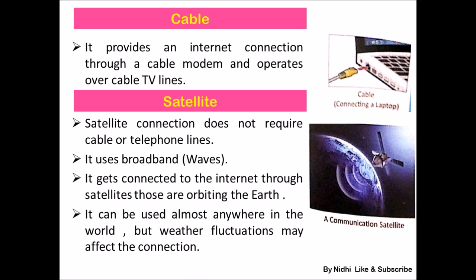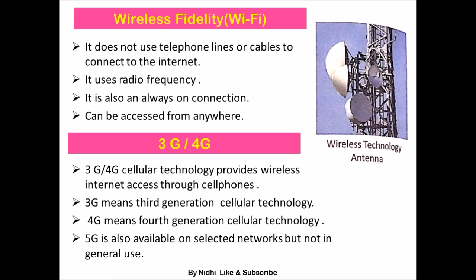The next type of connection is wireless fidelity, or Wi-Fi. It does not use telephone lines or cables to connect to the internet — it uses only radio frequency waves. It requires a nearby tower, is always on, and can be accessed from anywhere.